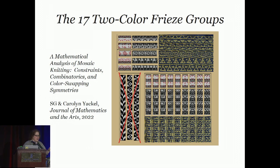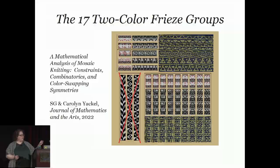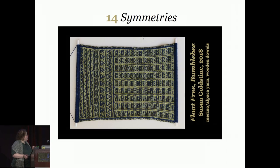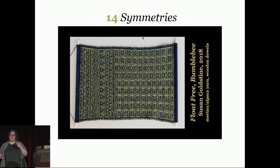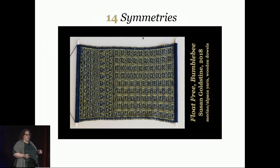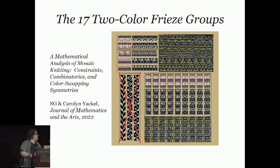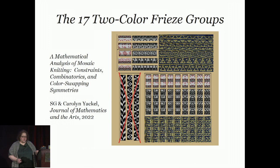The gift I'm giving out is related to this paper that Carolyn and I have coming out pretty much as we speak. There's a DOI for it on the card that I don't think works now but should probably work in a week or two. This piece of knitting is called Float Free Bumblebee, for reasons you can also ask about. The postcard has this on the front, and the information on the back — including that this picture is actually the graphical abstract for the Journal of Mathematics and the Arts paper that we wrote, with the title: 'Mandated Constraints, Combinatorics, and Color-Swapping Symmetries.' Alliteration in the title — very important.